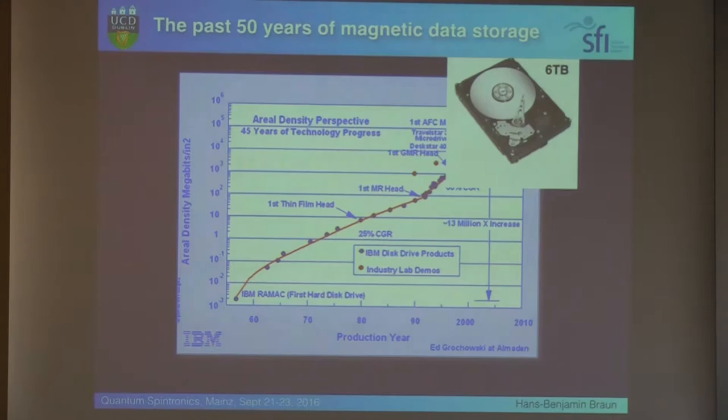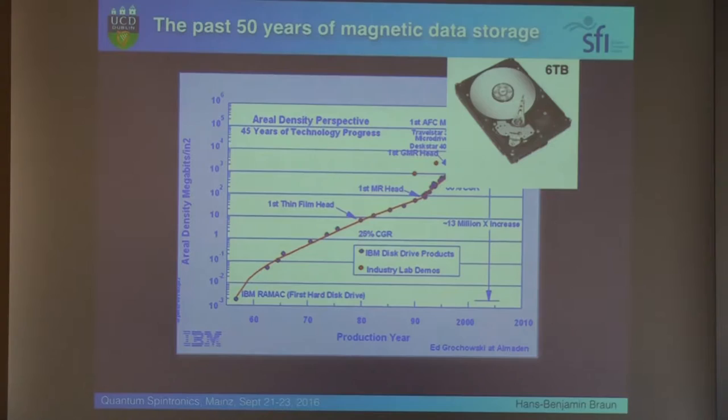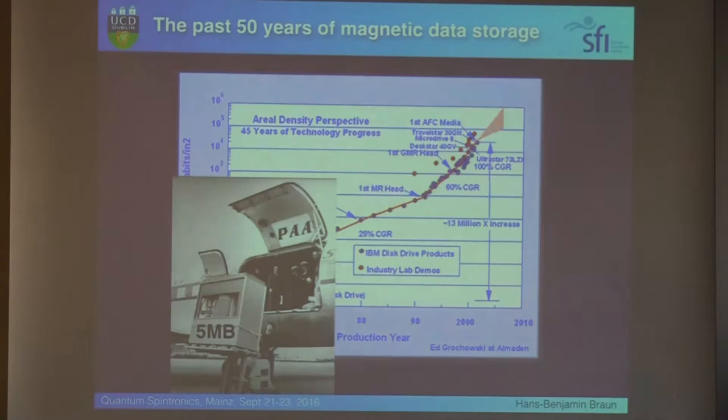And just I want to show you how that actually evolved over the past 50 years here. So this is a 6 terabyte hard disk drive which you get on the shelf now. And at the beginning you may wonder how it looked like. Actually very similar, but the scale was different. So this is a platter of a hard disk drive at the beginning with a lousy capacity of 2 kilobits per square inch. And actually if you wanted to load an iTunes song onto a plane, you needed a forklift at that time because it looked like this.